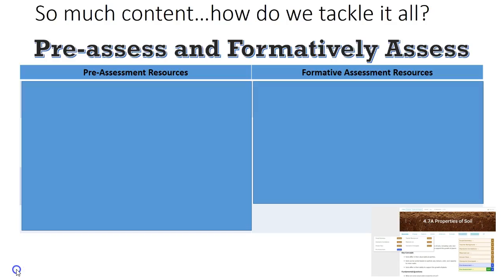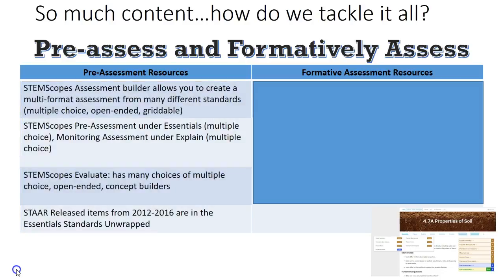That's a lot of content, so let's talk about a couple of strategies for tackling it all. When you sit down to start one of the three mini units, you'll want to pre-assess, and throughout the mini unit you'll want to assess formatively as well. That means taking time to see what students already know and filling in gaps. For pre-assessment resources on the left side of the screen, you might want to do a ten-question multiple choice pre-assessment to see what they've got and what they're still missing.